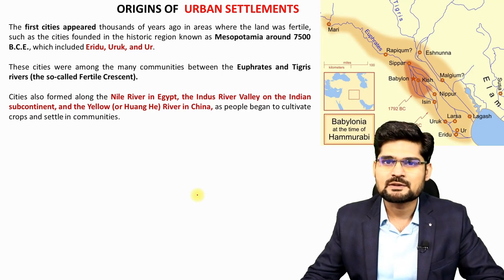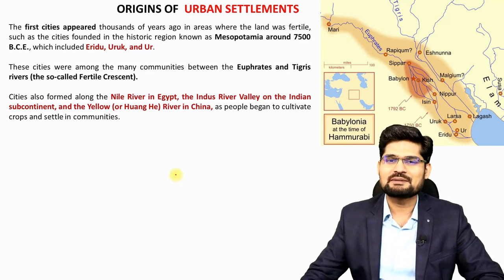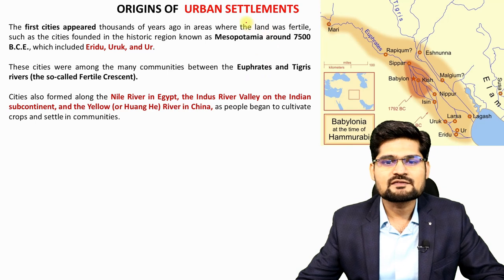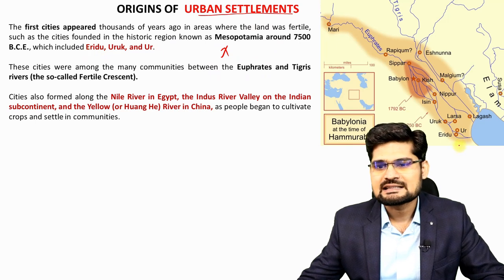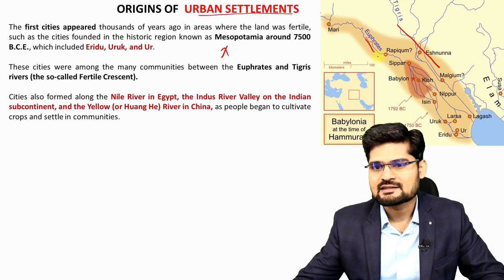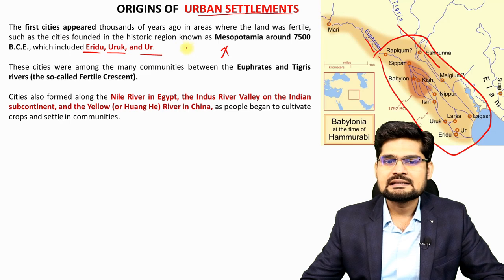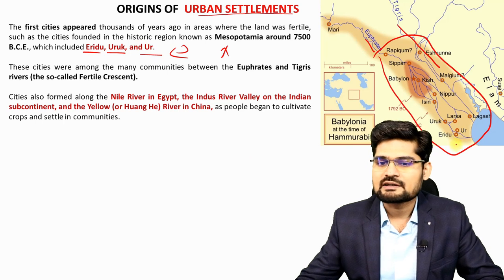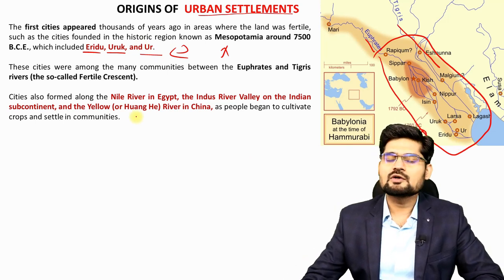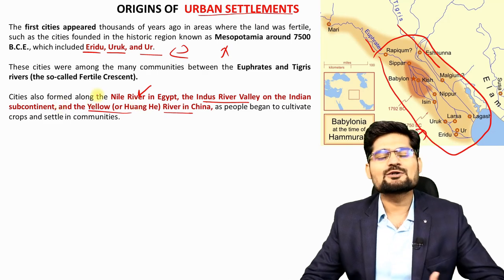If you look into the origins of urban settlements, which we also learned in the evolution of geographical thought, origins go right from the Neolithic revolution and the Mesopotamian civilization. Cities developed between the Euphrates and Tigris rivers — Eridu, Uruk, and Ur were among the first ancient cities in the fertile crescent area. Other cities developed alongside the Nile river, Indus river, and the Yellow river in China.